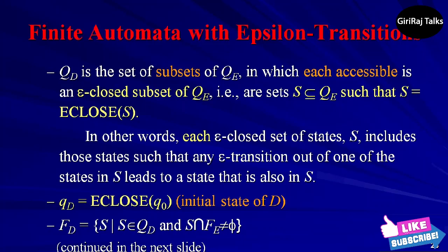Put another way, the epsilon-closed states are those such that any epsilon transition out of one of the states in S leads to a state that is also in S. Note that φ is an epsilon-closed state. Second, qD = ECLOSE(q0). That is, we get the start state of D by closing the set consisting of only the start state of E. Note that this rule differs from the original subset construction where the start state was just the set containing the start state of the given NFA.